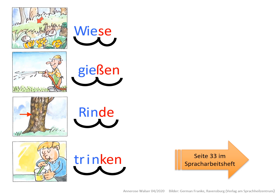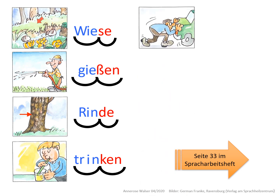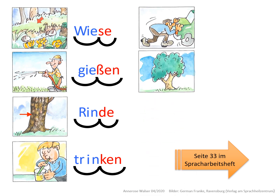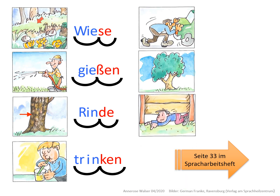In der ersten Silbe kommt das IE und dann das N. Trinken. Schieben. Linde. Kriechen. Diese drei Wörter machen wir jetzt noch zusammen.